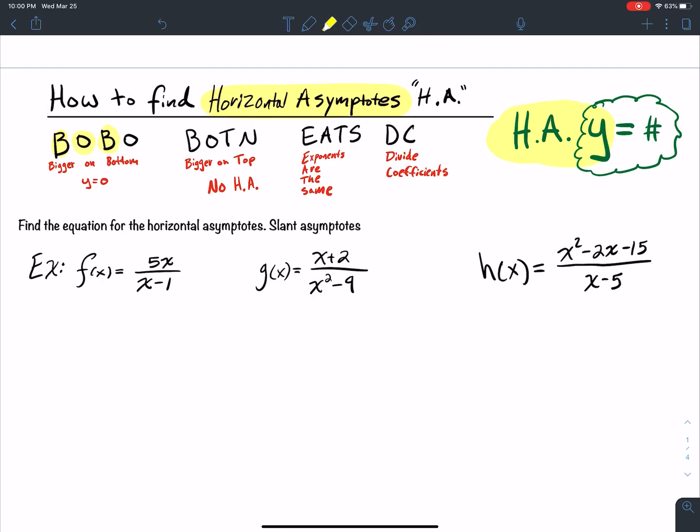Bo-bo-botton eats dc. Bo stands for bigger on, and then bo, bottom. The O is for y equals 0, horizontal asymptote y equal to 0. BOTTN stands for bigger on top, there's no horizontal asymptote. And then eats dc, eats dc, exponents are the same, divide coefficients. What am I talking about here? Bigger on bottom, bigger on top. We're looking at the degree of the numerator and the degree of the denominator.